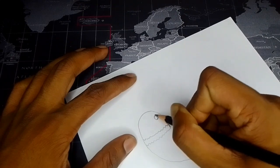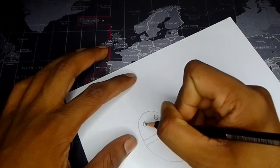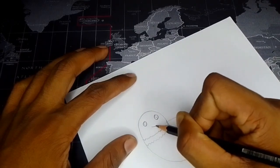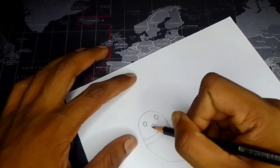And then make two circles just like this for the eyes. It's kind of the chicken face.